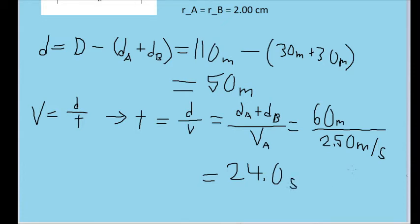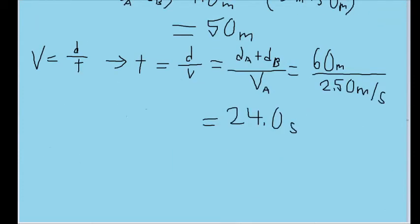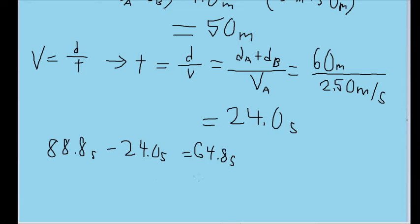We want to find the amount of time it took the dye to travel through the inside segment of the pipe. So we take the 24 seconds we just calculated and subtract it from the total time of 88.8 seconds. That gives us 64.8 seconds, meaning the dye spent about 64.8 seconds underneath the hill.